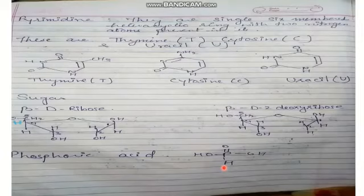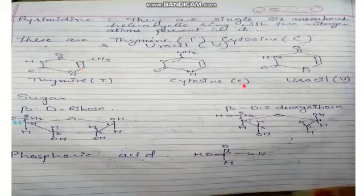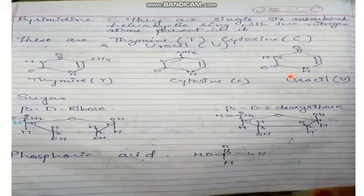The next type is pyrimidines, which are single six-membered heterocyclic rings with two nitrogen atoms present in them. There are three pyrimidines: thymine, cytosine, and uracil. Thymine and cytosine are present in DNA, whereas thymine is replaced by uracil in RNA. So in RNA, cytosine and uracil are present.